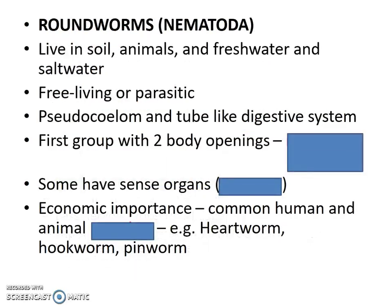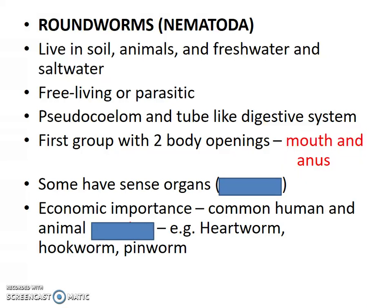Our last group today is Phylum Nematoda — the roundworms. These are adapted to live in all kinds of different environments: in soil, in animals, in freshwater, in saltwater. They can live independently or be parasitic. They do have a pseudocoelom — a false body cavity — and a tube-like digestive system. They are pretty advanced in that they have two body openings, both a mouth and an anus, so a one-way digestive tract. This means the organism can be digesting different meals at the same time without waiting for one meal to fully process before the next one goes in.